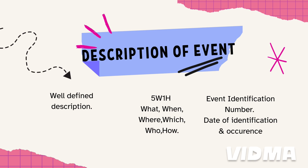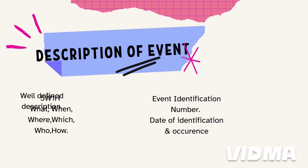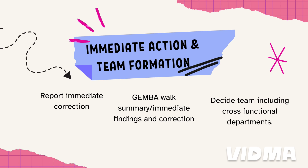Also, you need to mention the date of identification and date of occurrence. Next is immediate action and team formation — detail the immediate actions taken for the specific event. If you conducted a Gemba walk or visited the actual place, include this information as well.